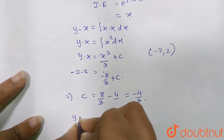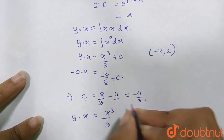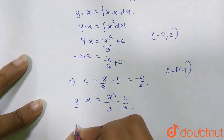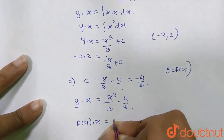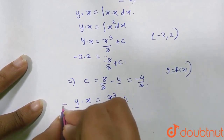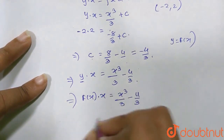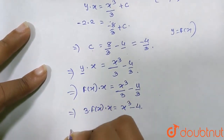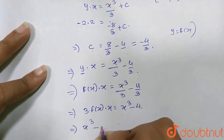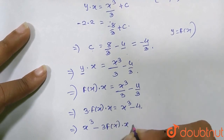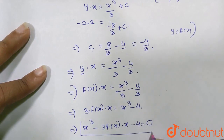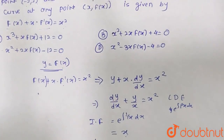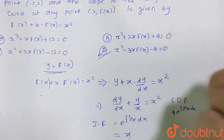Writing the solution again: y·x = x³/3 − 4/3, and since y = f(x), we have f(x)·x = x³/3 − 4/3. Multiplying throughout by 3: 3·f(x)·x = x³ − 4, which rearranges to x³ − 3x·f(x) − 4 = 0. This matches option D, so D is the correct answer.